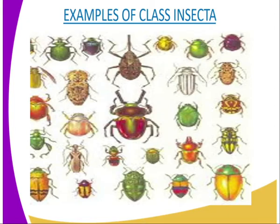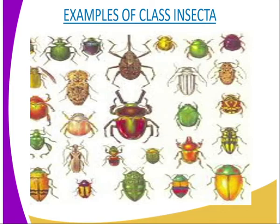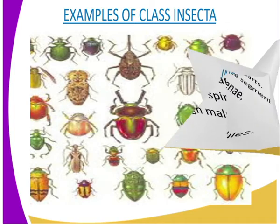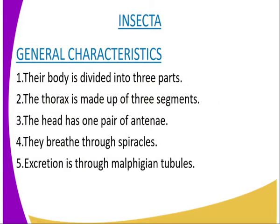One of the characteristics is that the body is divided into three parts — that is the head, thorax and abdomen. The thorax is made up of three segments with three pairs of legs. Some insects have one or two pairs of wings on the thorax. The head has one pair of antennae.